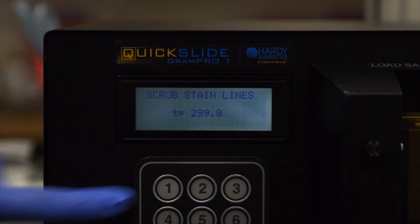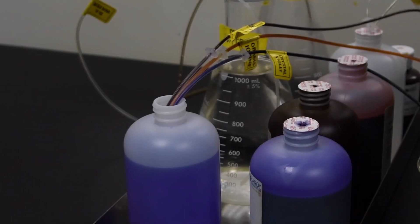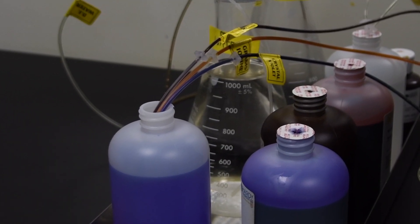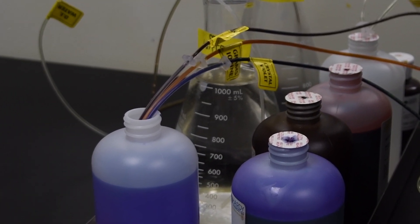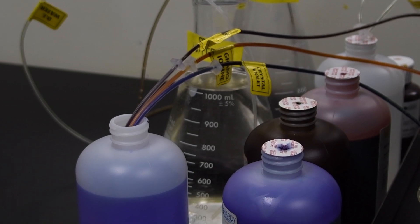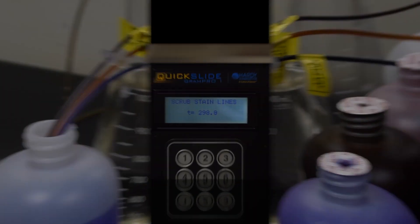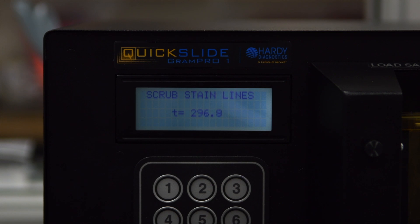Press 1 to return to the scrub. The reagent lines will now have decolorizer or bleach, depending on the purpose of the cycle, washed through the lines and the cuvette. This normally takes about 5 minutes.